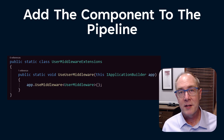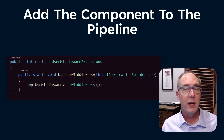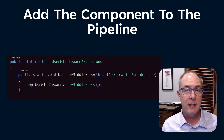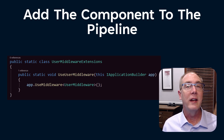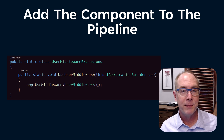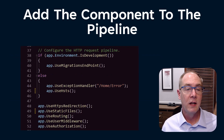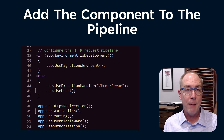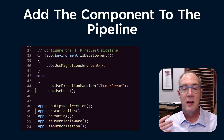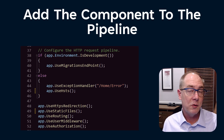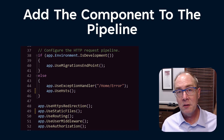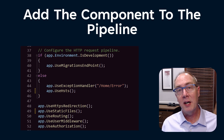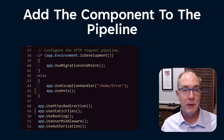Once we've defined what our custom middleware component is going to do, we need to add it to the ASP.NET pipeline. To do that, we'll create a static extension method that takes in the application builder and add it via that application builder. In your program.cs file, you'll have something like app.UseStaticFiles, UseRouting, then UseUserMiddleware — which would be your custom component — and then UseAuthorization. That's all you need to do to establish that chain of middleware components for ASP.NET.